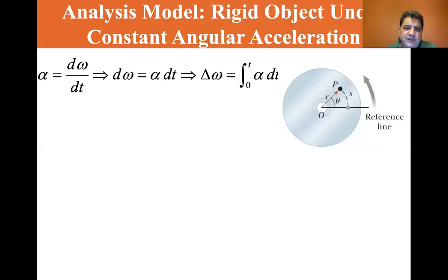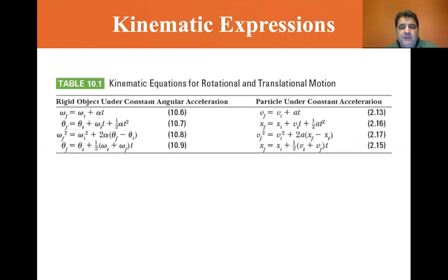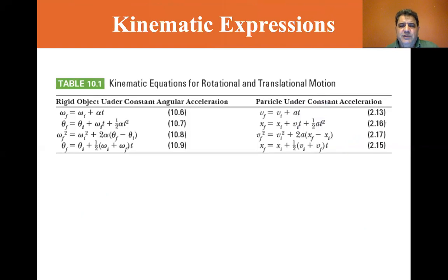We are at section 10.2, analysis model: rigid object under constant angular acceleration. You will get the PowerPoints from this, but as you can see it has a lot of equations. If you recall from chapter two, we had the kinematic expressions for a particle under constant linear acceleration. We are going to come up with kinematic expressions for rotational motion — a rigid object under constant angular acceleration.